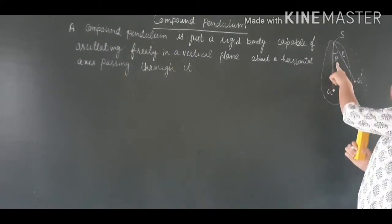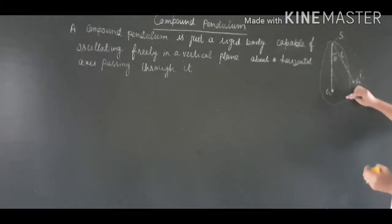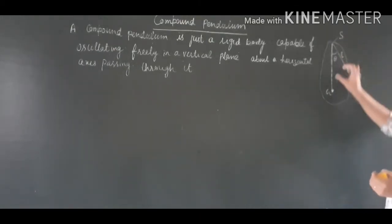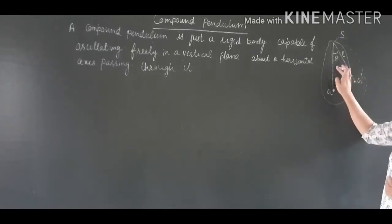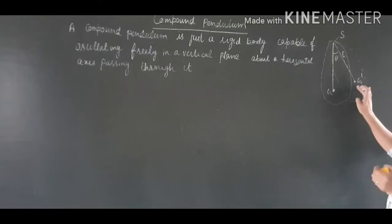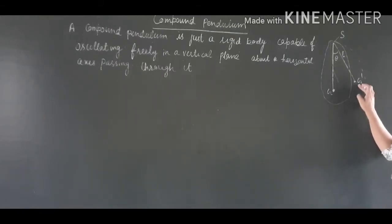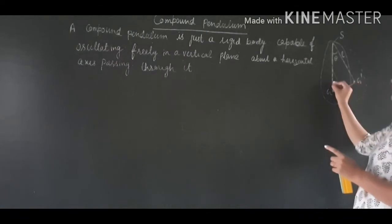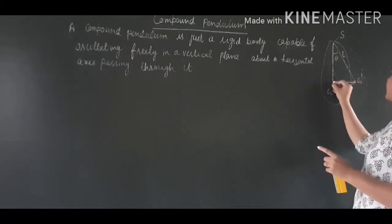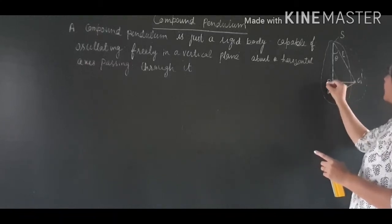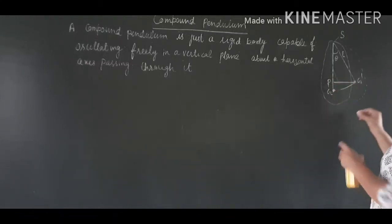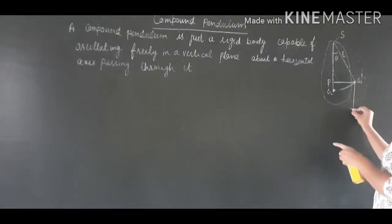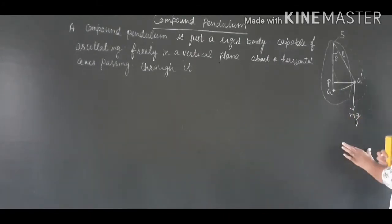When we displace this rigid body through a small angle θ, the rigid body moves to a new position. This point G shifts to G dash. The small angle is θ, G goes to G dash. Now if we call this new point P, the weight Mg acts downward at G dash.